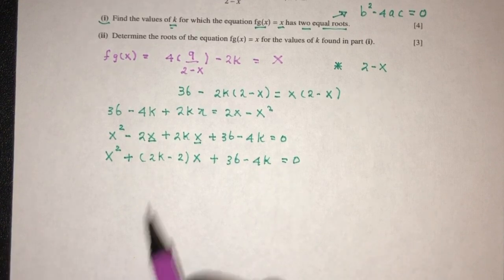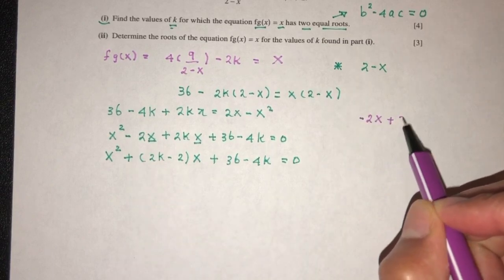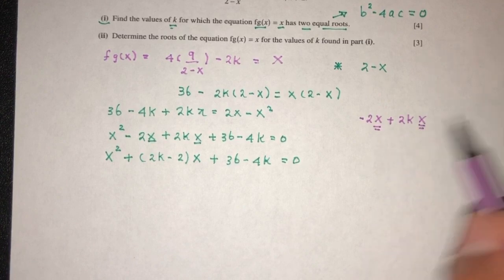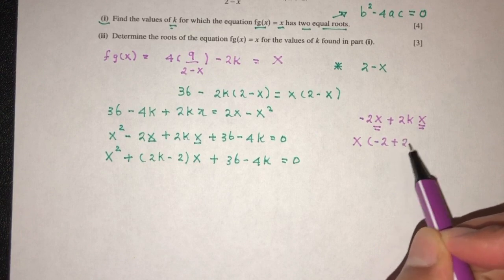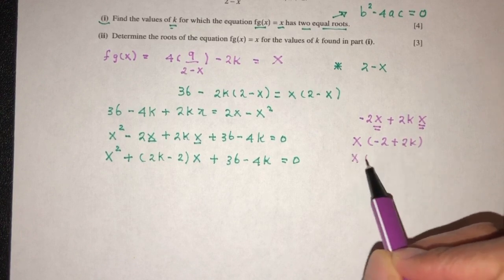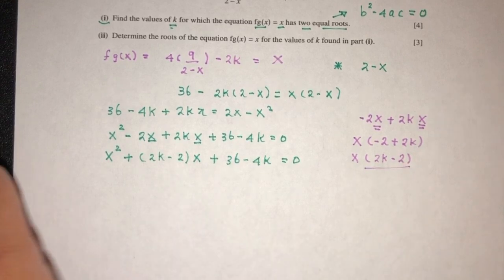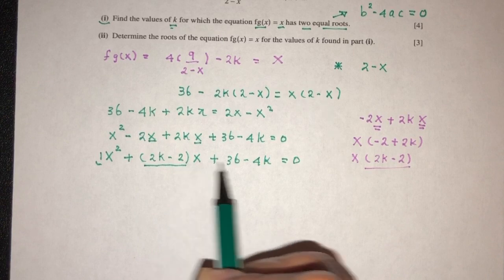I want you guys to understand what happened here because it might confuse some people. So if you look at this, we have minus 2x plus 2kx. Now x and x are common. I can factorize x outside. So you have minus 2 plus 2k, which is the same as saying 2k minus 2. This is here. Now this is the value of 1 here. That will be b and that will be c.